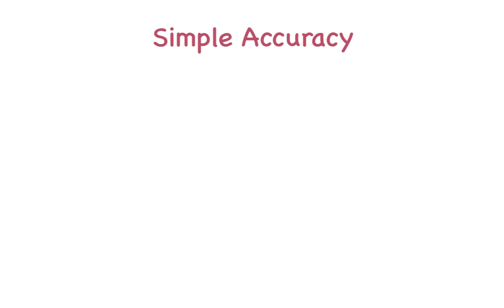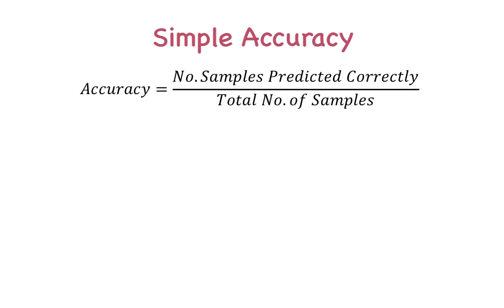Consider the performance measure of simple accuracy. You would have learned this definition in grade school, but let's redefine it here so that we're all on the same page. It is the number of samples predicted correctly divided by the total number of test samples. It's easy to understand and it gets the job done. So why do we need other performance measures? Isn't simple accuracy good enough? It actually isn't, and here's why.